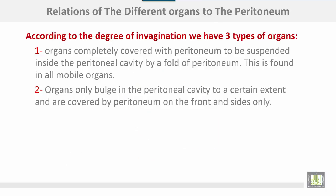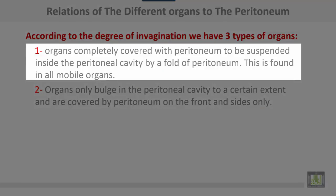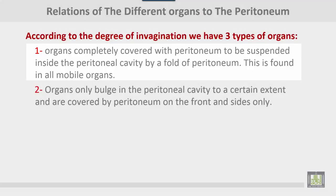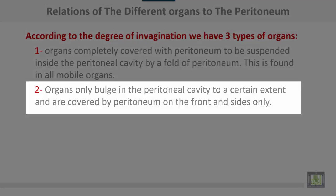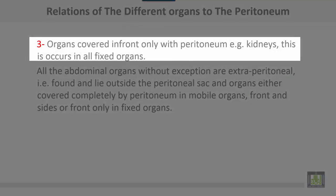In relation of different organs to peritoneum, organs are either completely covered with peritoneum and suspended inside the peritoneal cavity by a fold of peritoneum — this is found in all mobile organs. Organs may only bulge into the peritoneal cavity to a certain extent, being covered by peritoneum in front and sides only. Some organs are covered in front only — these are called retroperitoneal structures — as seen in the anterior surface of the kidney, and this applies to all fixed organs.